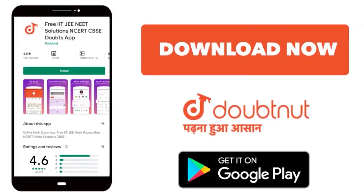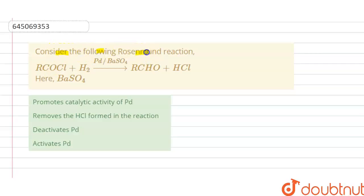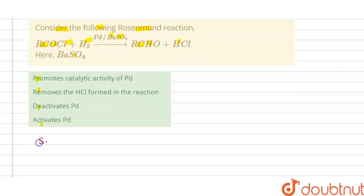Consider the following Rosenmund reaction: RCOCl + H₂ with Pd (palladium) and BaSO₄, giving RCHO + HCl. Here we have to find what BaSO₄ does. Options A, B, C, D are given, so we have to choose the correct option. The solution to this question is: